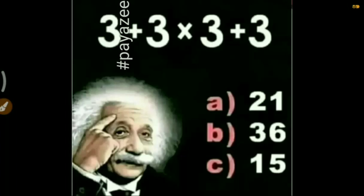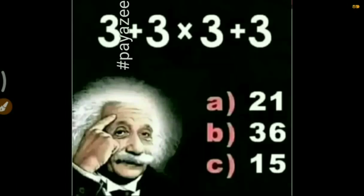Option A is 21, option B is 36, and option C is 15. So friends, pause the video and try to solve the puzzle. Comment it on the YouTube channel, comment it on this video and see whether you are correct or wrong.